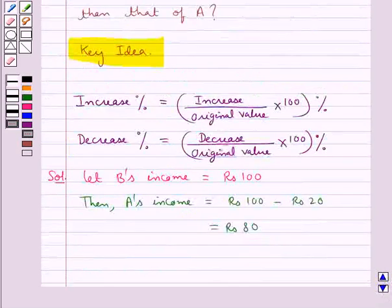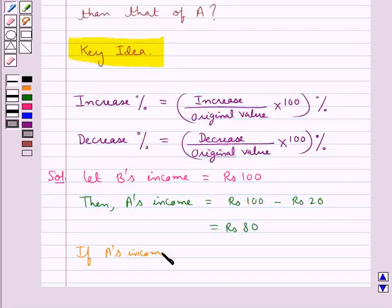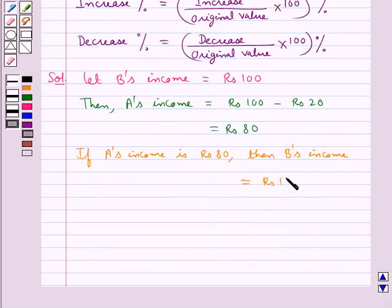Now, if A's income is Rs. 80, then B's income is equal to Rs. 100.